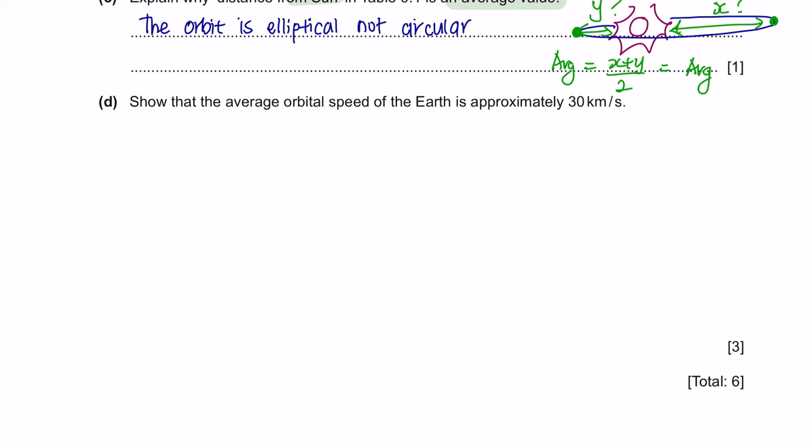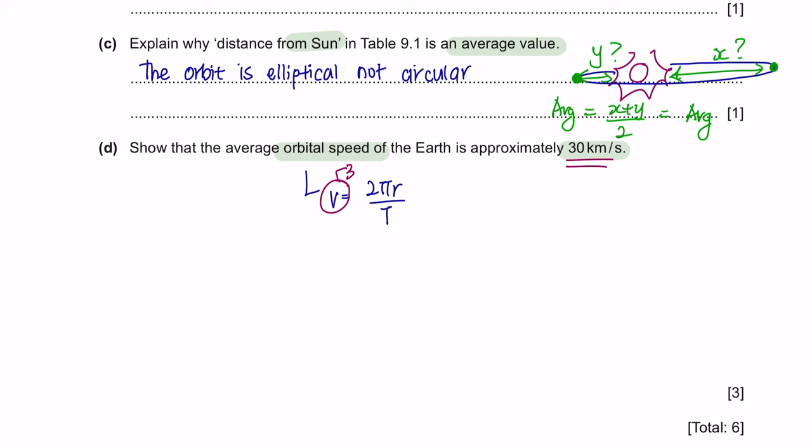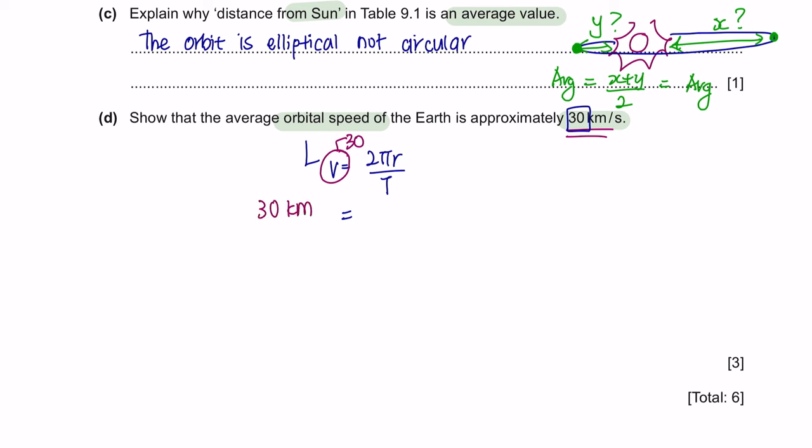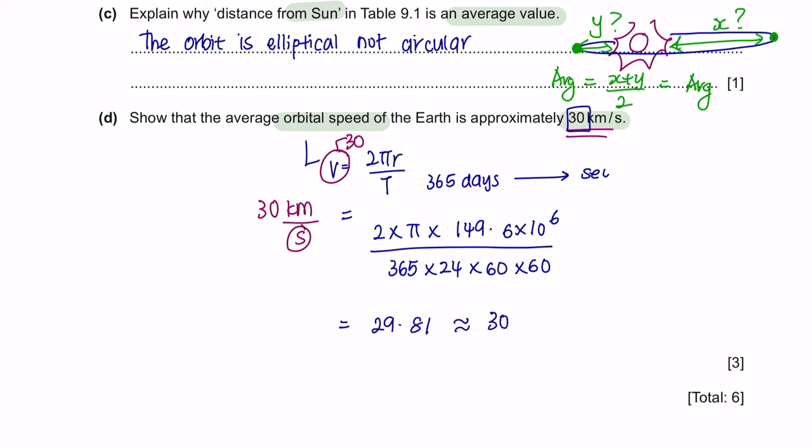Next, question D. Show that the average orbital speed of the Earth is approximately 30 kilometers per second. The formula for orbital speed is 2πr over t. So, we need to show that the orbital speed is 30 kilometers per second. According to the table, the radius of Earth is 149.6 and the value of t is 365.2 days. As you can see here, the answer that we want to prove is 30 kilometers per second. Meaning that the time which is 365 days has to be converted into seconds. So, let's do that. 2 times π, the radius is 149.6 times 10 to the power of 6 kilometers over 365 days times with 24 hours times with 60 minutes and 60 seconds. Putting all this value in your calculator, you will get 29.81. So, 29.81 is approximately 30. So, there you go. You have shown that the speed of the Earth is indeed 30 kilometers per second.